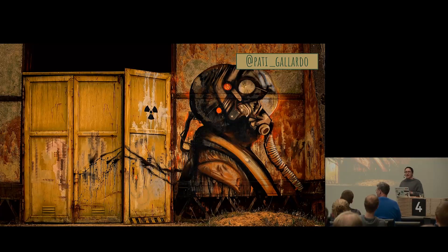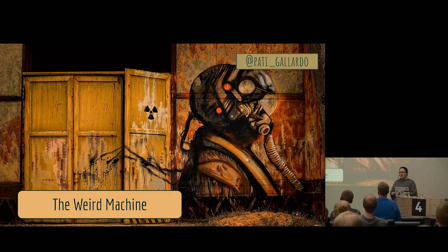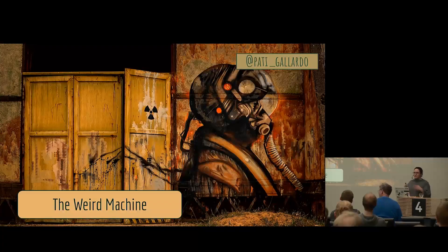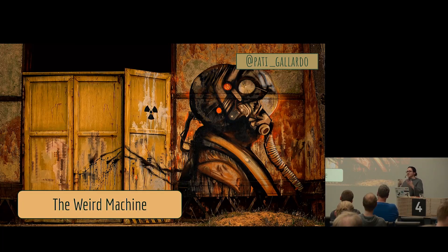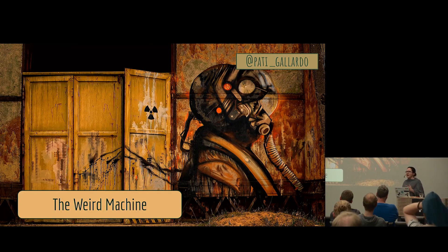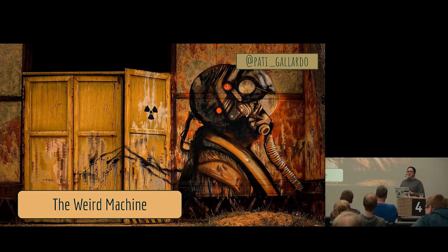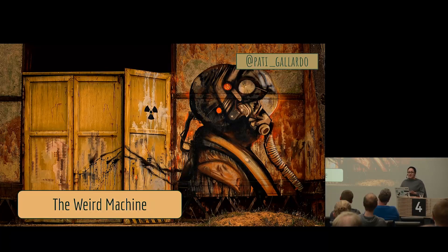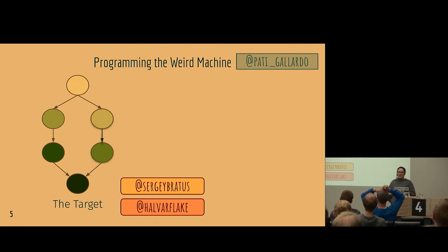I want to present a mental model first, and we'll return to it at the end. This is the model of the weird machine. It was developed by two mathematicians turned exploit developers, refined over several years and papers. Their goal was to lend some formalism to exploit development, which has mostly been informal knowledge sharing — lots of myth, difficult to learn as a discipline because there aren't necessarily many books.